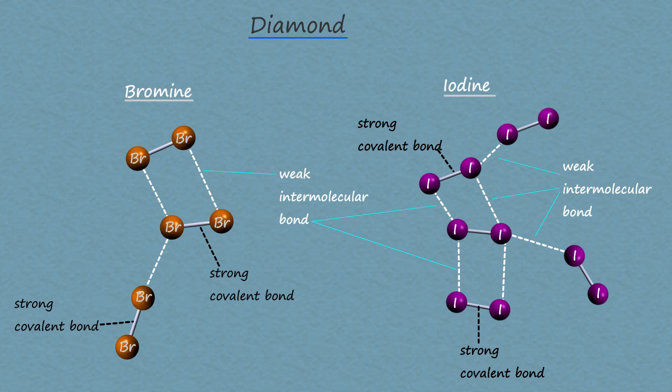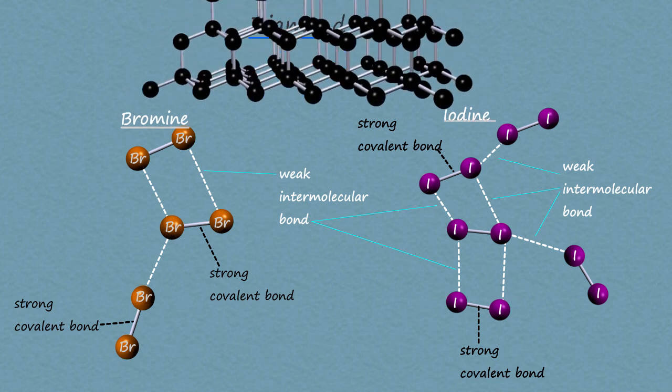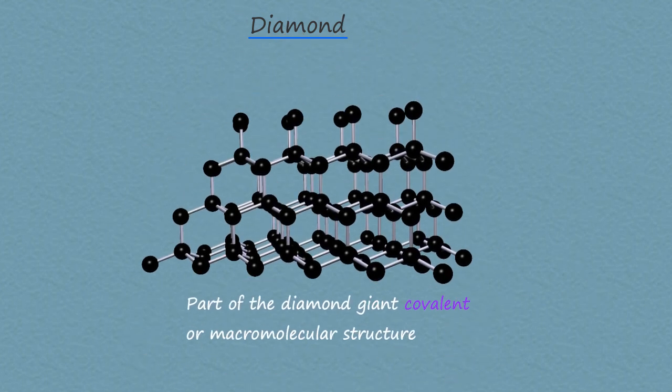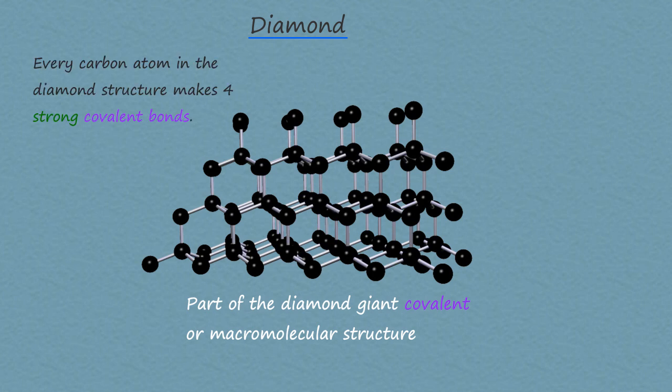This weak intermolecular bonding is one of the main reasons why small covalent molecules are mostly gases and liquids with low melting and boiling points. Diamond does not have a molecular structure, but has a giant covalent structure, part of which is shown on the screen. In this giant structure, each carbon atom makes four strong covalent bonds.